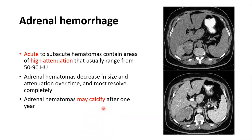Acute to subacute adrenal hematomas contain areas of high attenuation ranging from 50–90 HU. They decrease in size and attenuation over time and most resolve completely. Adrenal hematomas may calcify after one year. Key clinical scenarios for adrenal hemorrhage: patients on anticoagulation, post-surgery, or after abdominal trauma. A new adrenal lesion appearing within a week after surgery is highly suggestive of hemorrhage.